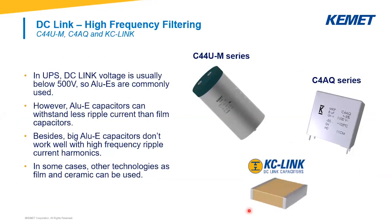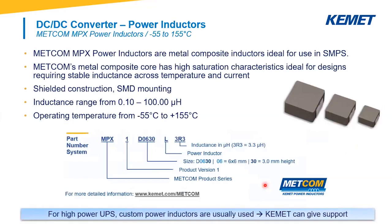UPS DC-Link voltage is usually below 500V, so electrolytics are commonly used. However, electrolytics can withstand less ripple current than film capacitors, and big electrolytic capacitors don't work well with high-frequency ripple current harmonics. So in some cases, film and ceramic capacitors can be used as DC-Link or in parallel with the electrolytics. We offer the C44UM series for high-power screw-mounting applications, the C4EQ DC-Link film box for PCB mounting, and finally our KC-Link — a DC-Link ceramic capacitor with SMD mounting.